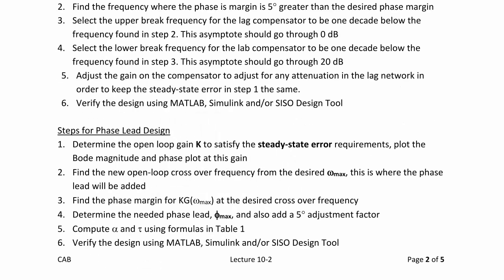Finally, the steps for phase lead design. It starts off similar to the other two. You want to determine the open loop gain k to satisfy the steady state error requirements, and then plot the Bode magnitude and phase plot at this gain. Next, find the new open loop crossover frequency from the desired omega max. This is where the phase lead will be added.